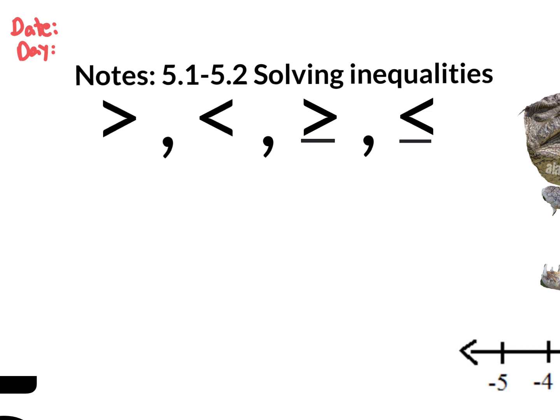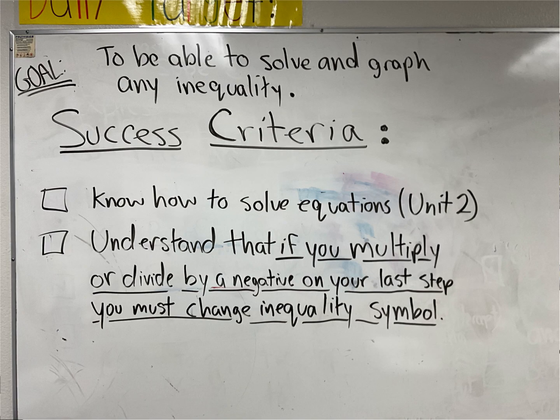We're moving on to Unit 5, which is solving inequalities. And solving inequalities is done exactly the same as solving equations. So if you were good at solving equations back in Unit 2, you're going to think of it as the easiest unit in all of Algebra 1. On the board we have our success criteria and our learning target. What do we want to do by the end of this unit? We want to be able to solve and graph any inequality.